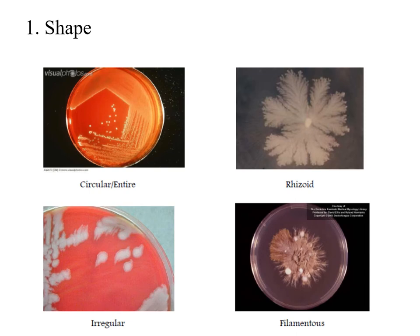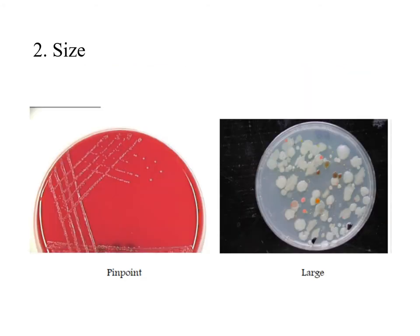Starting with shape: bacterial colonies come in different shapes, such as the circular or entire shape. We also have the rhizoid shape and the filamentous shape. The rhizoid shape has a snowflake-like appearance, while the filamentous is circular in the middle with tiny projections at the outer edge of the colony. We also have irregular-shaped colonies. Regarding size, it may vary from pinpoint — 0.2 to 0.3 millimeters — to as large as 6, 7, or even 10 millimeters in diameter.